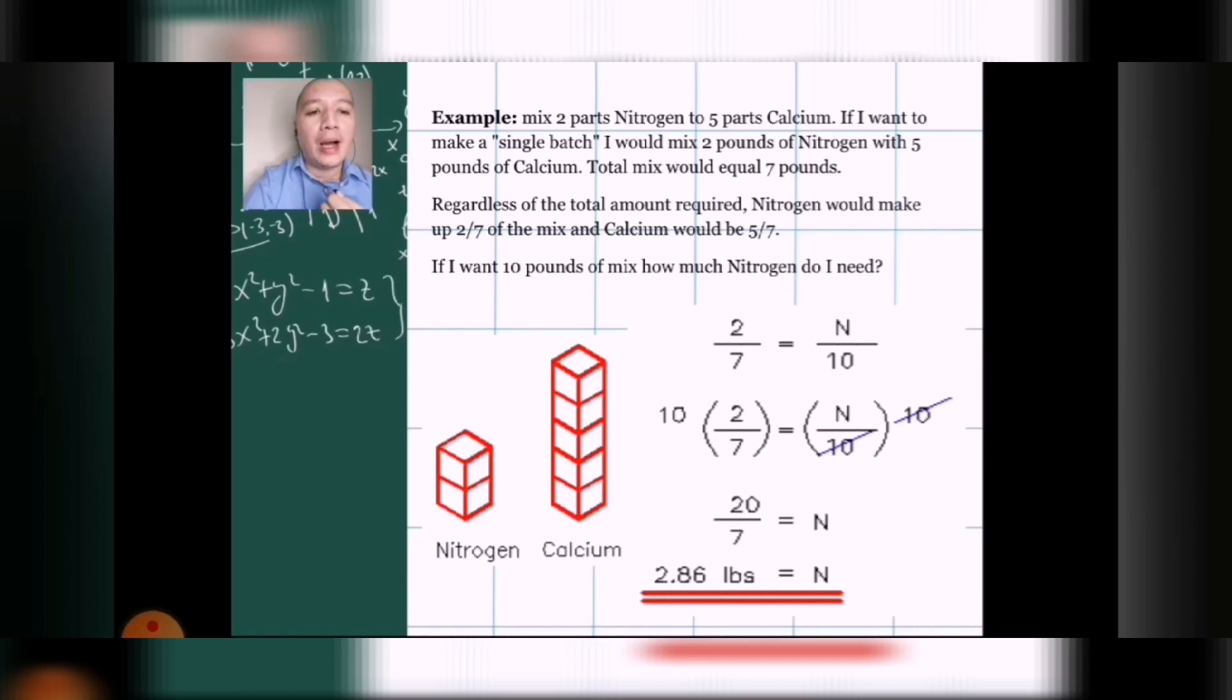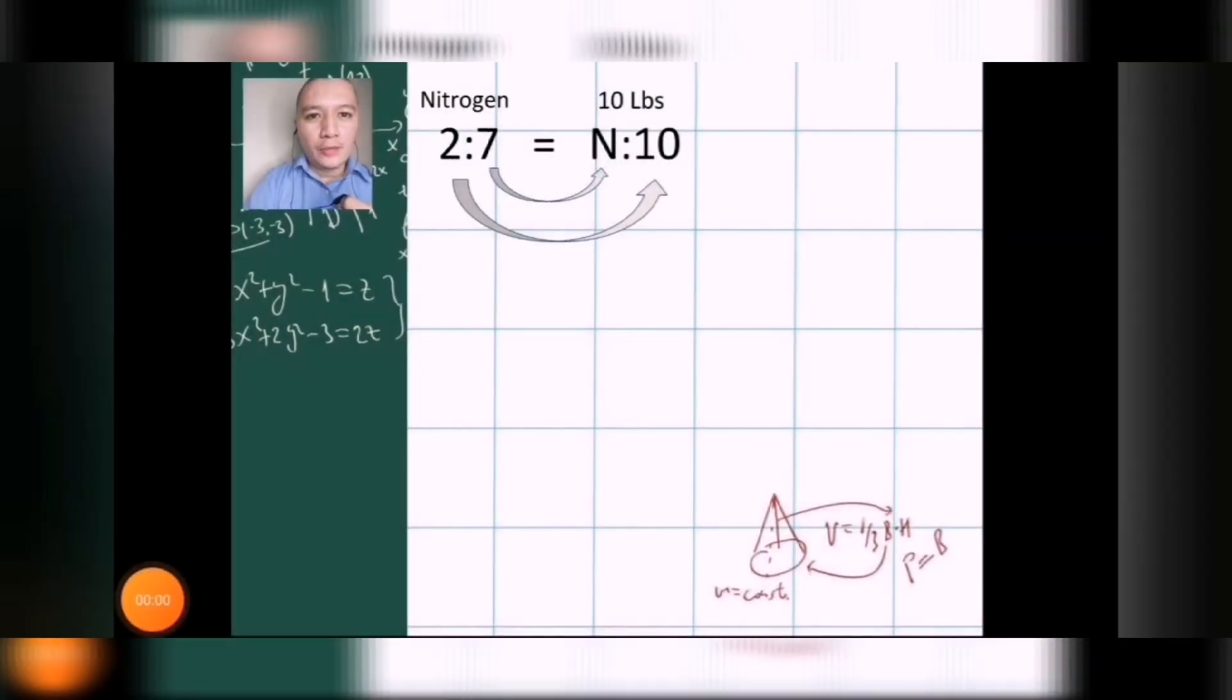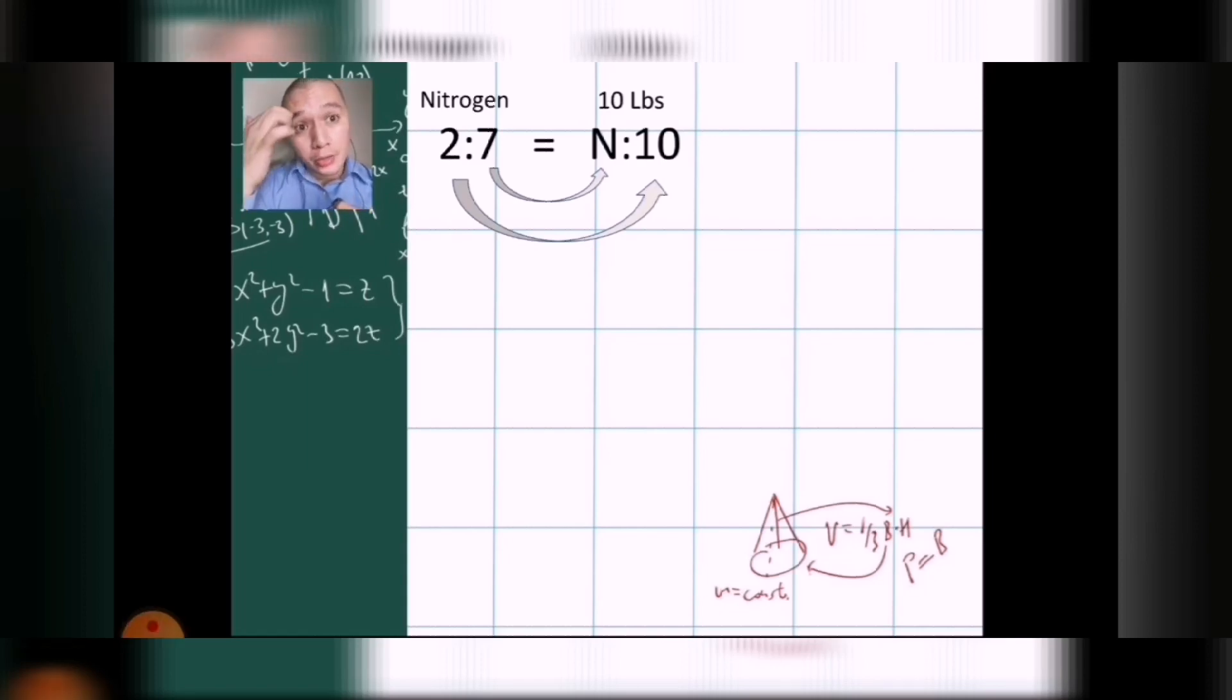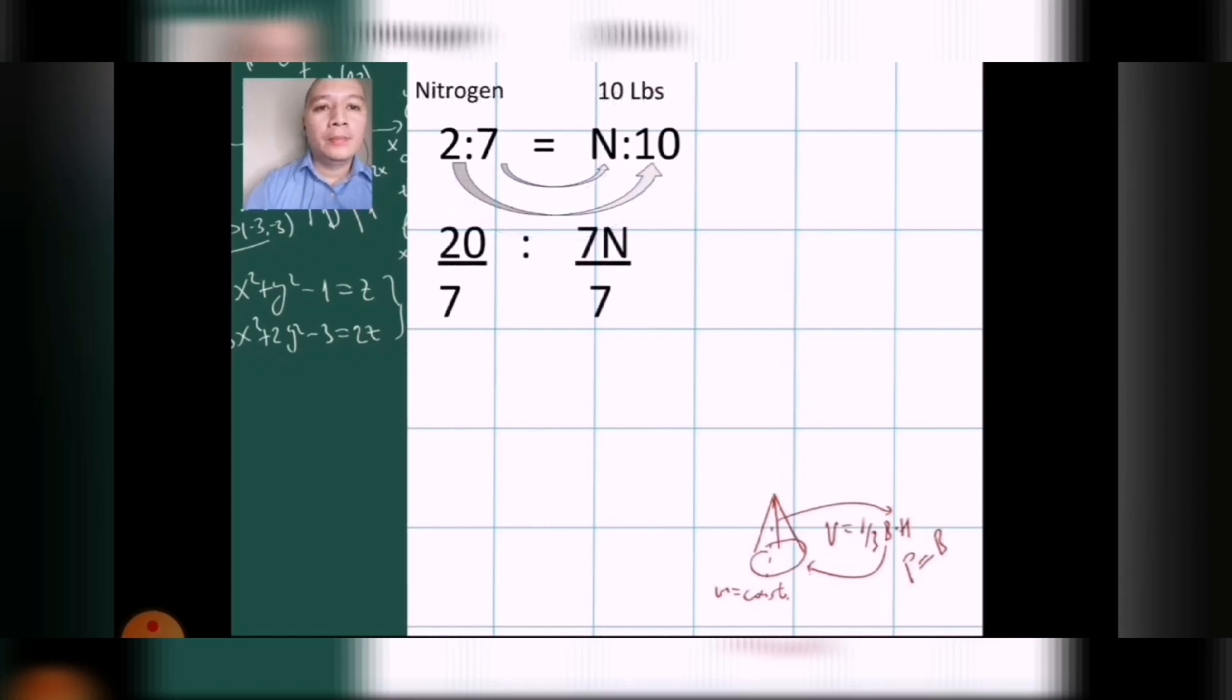Now, in solving ratio and proportion, we can use cross multiplication or the inner and outer method. When I say inner and outer, we would write it in such way. 2 is to 7 equals to N is to 10. We would have to multiply the inner parts as well as the outer parts. So, here, how we would write it is that 7 is multiplied to N while 2 is multiplied to 10.